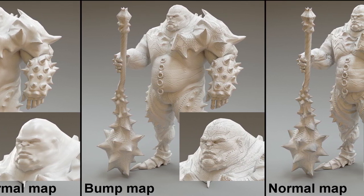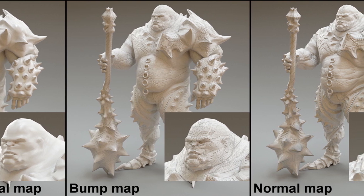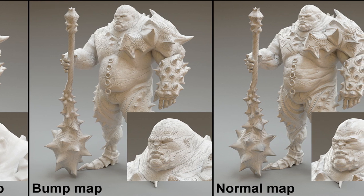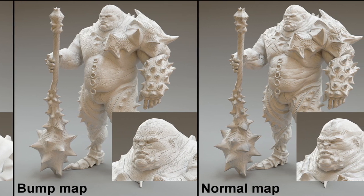It would be expensive to model every little nook and cranny in the geometry, but bump maps create the effect by manipulating the light hitting it to create shadows as if the geometry was actually there.